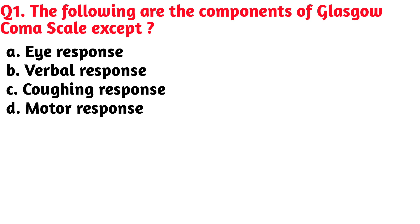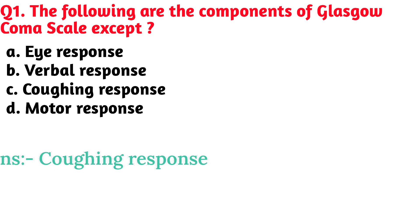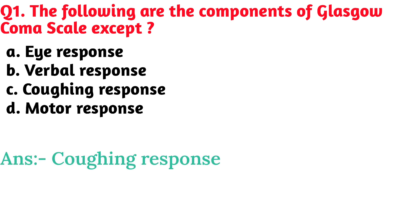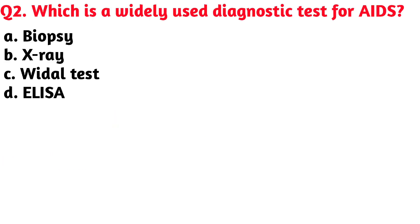The following are the components of Glasgow Coma Scale except — Option C, cuffing response, is the correct answer. Next question: which is a widely used diagnostic test for AIDS? Option D, ELISA, is the correct answer.